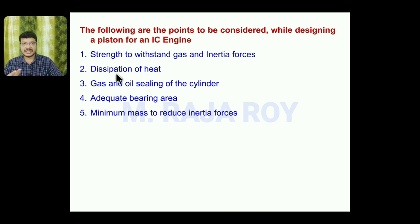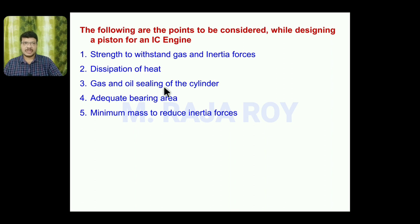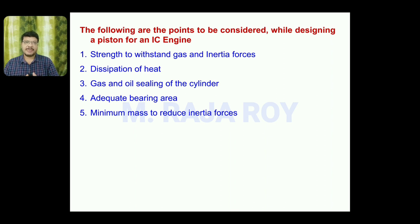When the combustion takes place, it generates heat, and temperature rise takes place on the piston head — we have to dissipate it to the surroundings properly. The third consideration is gas and oil sealing of the cylinder: between the piston and cylinder, we place sealings using piston rings and oil rings to avoid leakage. Fourth, adequate bearing pressure must be considered when the piston reciprocates inside the cylinder and the piston wall contacts the cylinder wall. Fifth, we must minimize the mass of the piston to reduce the inertia forces, since when the mass is more, we automatically get more inertia forces.